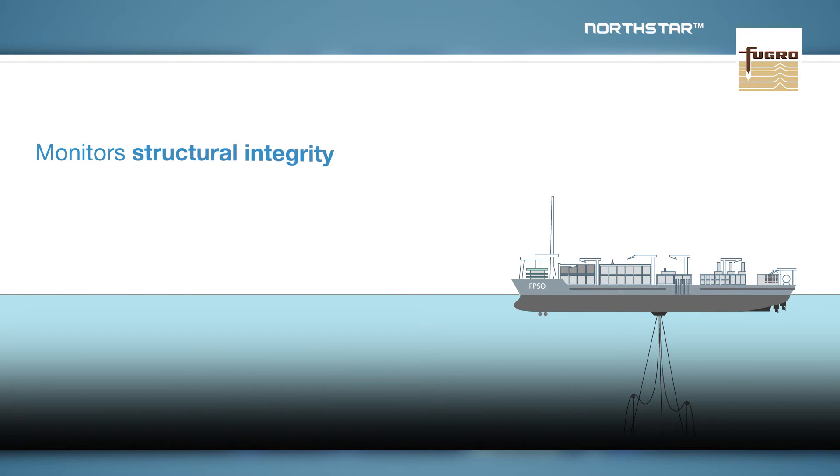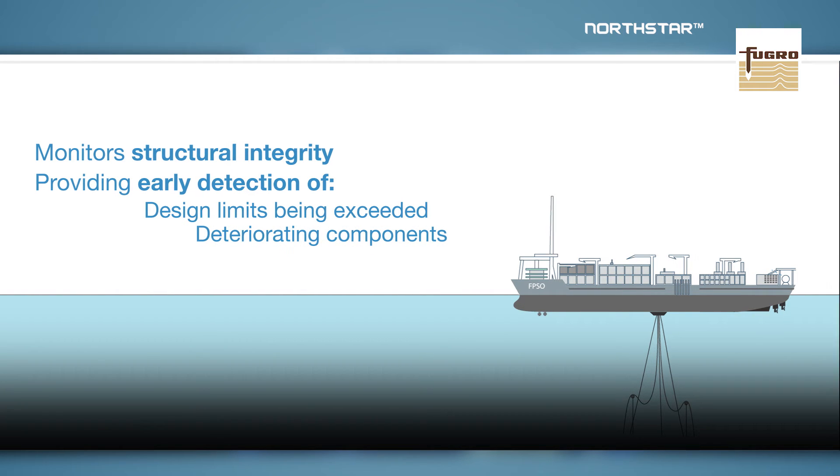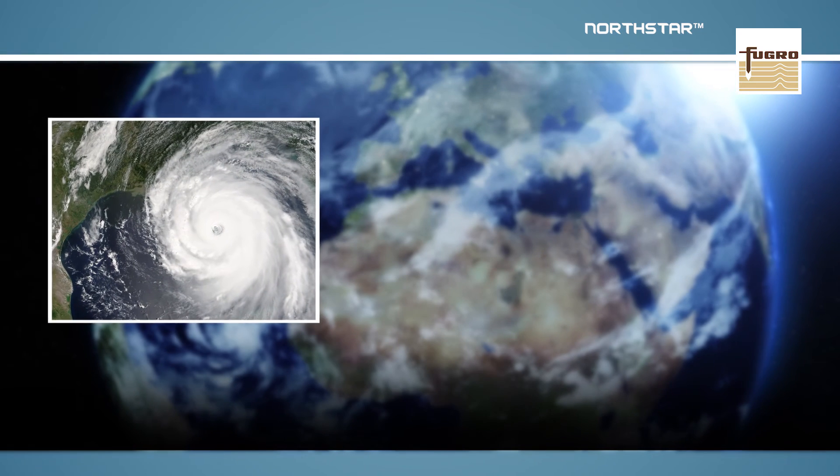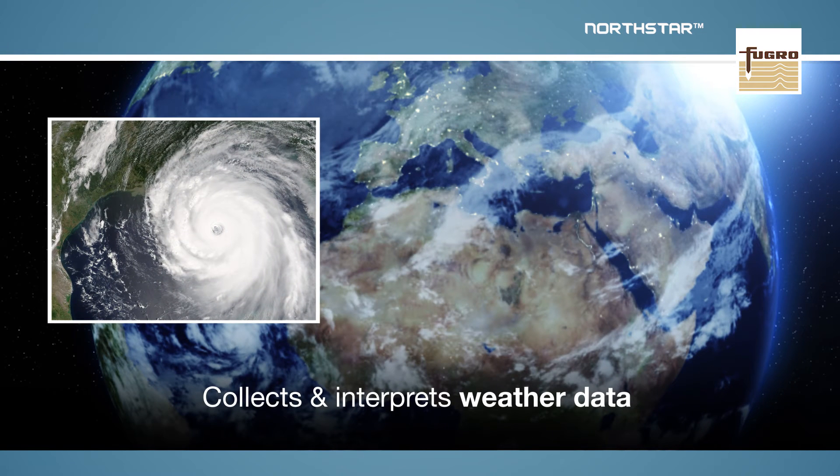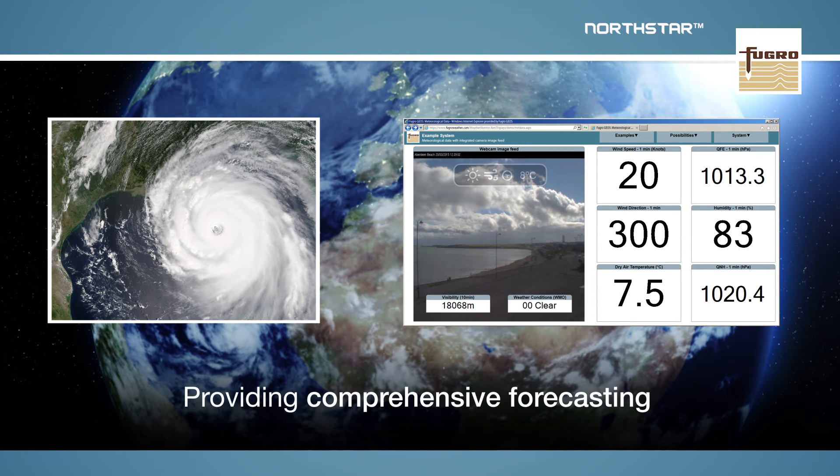Northstar monitors structural integrity, providing early detection and warnings if design limits are exceeded or components are deteriorating or failing. It also collects and interprets data on meteorological and oceanographic conditions and provides forecasts to aid planning of weather critical activities.